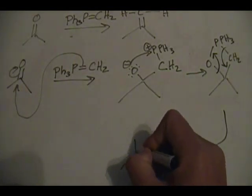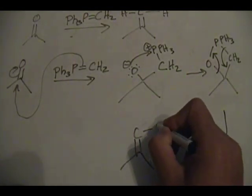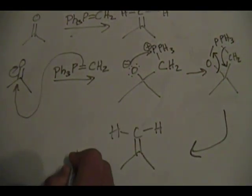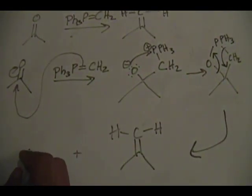This bond between the oxygen and carbon goes back up to form a phosphorus-oxygen double bond. So your final product will be your alkene product, which looks like this, plus you get your side product.